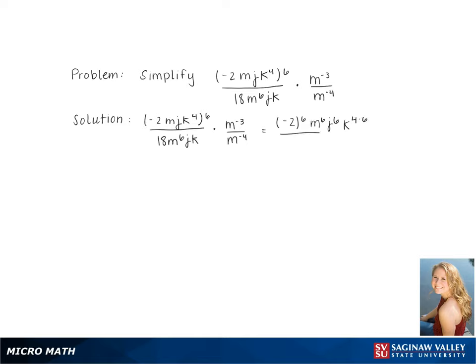This gives us negative 2 to the 6th, m to the 6th, j to the 6th, and k to the 4 times 6, all over 18m to the 6th jk.